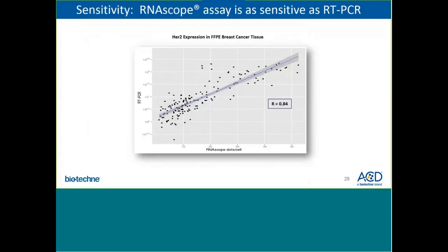In comparison to reverse transcription PCR, RNAscope shows similar sensitivity and limit of detection as highlighted in experiments looking at expression of the HER2 gene in 416 paraffin-embedded breast cancer tissues. The number of dots per cell with RNAscope, shown on the x-axis, highly correlated with transcript levels as assessed by RT-PCR, showing a nearly linear relationship between the two assays, again demonstrating similar sensitivity and limit of detection.